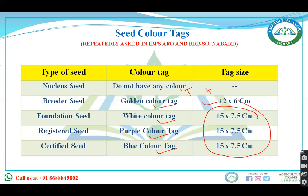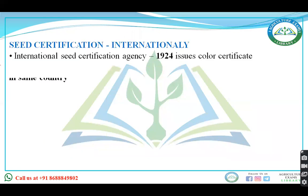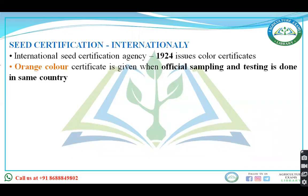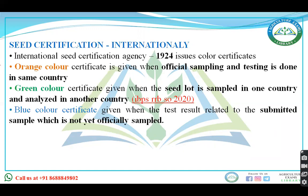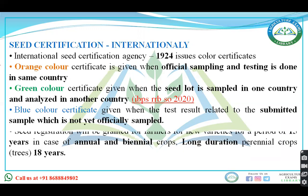The international seed certification agency was established in 1924 in Switzerland. Orange color certification means sampling and testing are done in the same country. Green color means the seed lot is sampled in one country and tested in another. Blue color certification applies even when test results relate to submitted samples that have not been officially sampled.